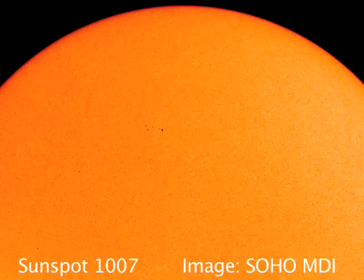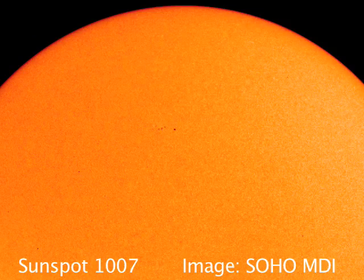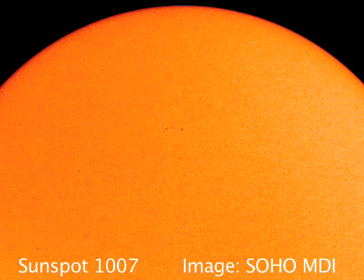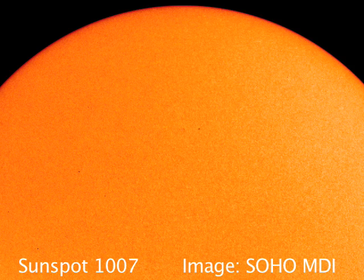This is an astrotometry vlog, November the 2nd, 2008. On the 30th of October, 2008, another Cycle 24 sunspot emerged on the face of the sun.